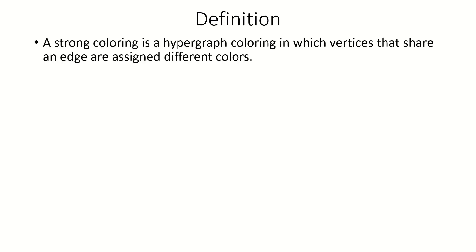Today we're going to look at strong hypergraph colorings. A strong coloring is a hypergraph coloring where adjacent vertices are assigned different colors.